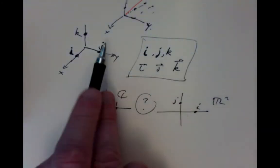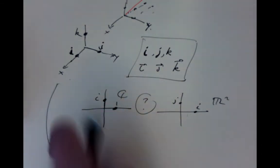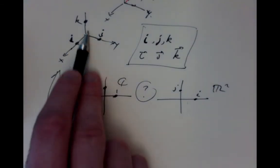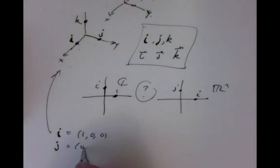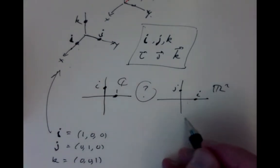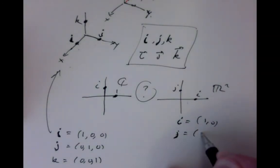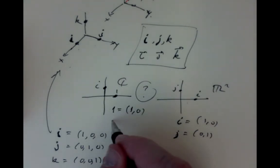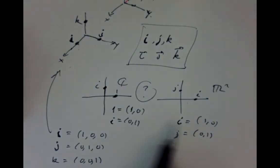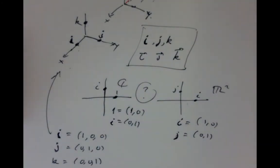In three dimensions, specifying one unit in each direction: vector i is (1, 0, 0), j is (0, 1, 0), and k is (0, 0, 1). In the plane, i = (1, 0) and j = (0, 1). But if we think of them as complex numbers, the complex number 1 corresponds to (1, 0) and the complex number i corresponds to (0, 1), which doesn't agree with the vector convention. So there are two different conventions — one for vectors in the plane and another for complex numbers — and there's a danger of confusion.